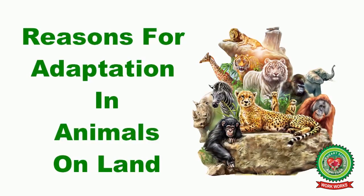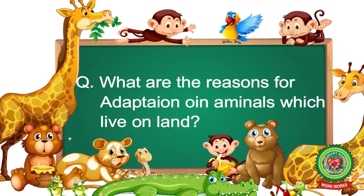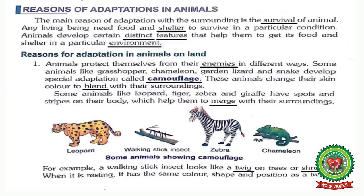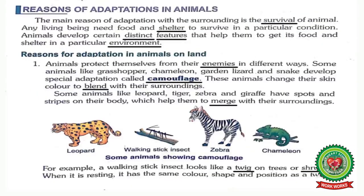Reasons for adaptation in animals on land. The question arises: what are the reasons for adaptation in animals which live on land? Number one, animals protect themselves from their enemies in different ways. Underline the word 'enemies' and write down its meaning: a person or organism who is actively opposed. Animals develop different kinds of methods to protect themselves from their enemies.